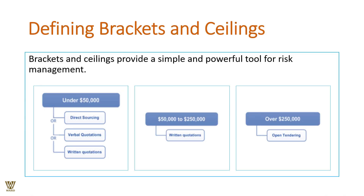Bracket and ceiling thresholds provide a simple yet powerful tool for risk management. For example: anything under $50,000 can be purchased directly with a verbal or written quotation. Between $50,000 and $250,000, a written quotation with a minimum of three bids is required. Over $250,000 requires open tendering — publicly announced and publicly procured. These thresholds illustrate what risk management is all about.